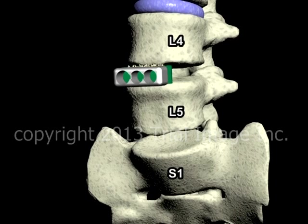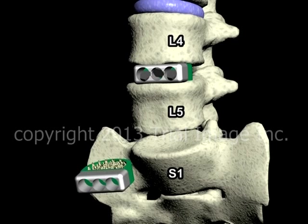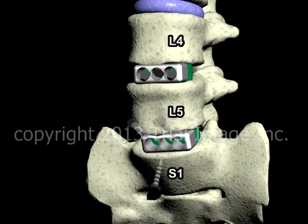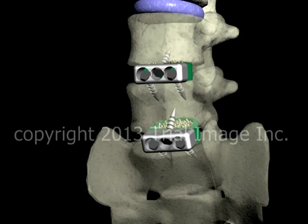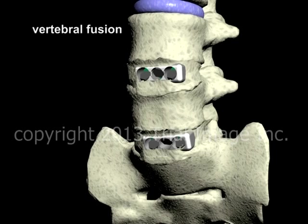After insertion into the intervertebral space, the implant is fixated with special screws which anchor it in place. The bone graft material stimulates additional growth of bone between the vertebra. Six to twelve months after surgery, the fusion is complete. What were three individual vertebrae have now fused into one solid, bony structure. The fusion restores mechanical stability to the spine and greatly reduces or eliminates the pain associated with movement of vertebrae which have been subject to degenerative change.